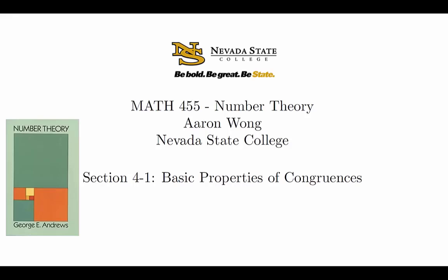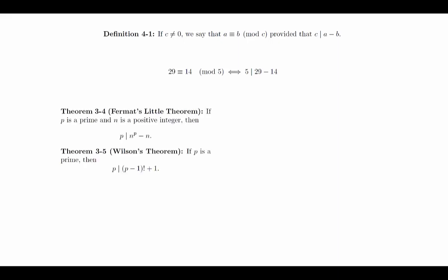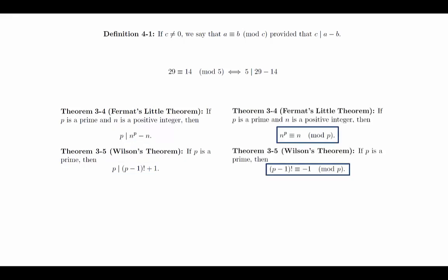Congruences are an extension of the idea of divisibility. Instead of checking to see whether a single number is divisible by another, we're actually looking at whether two numbers are related to each other via the divisibility condition. If c is not equal to 0, we say that a is congruent to b mod c, provided that c divides a minus b. For example, we have that 29 is congruent to 14 mod 5, since 29 minus 14 is 15, and 5 divides 15. We can also restate Fermat's theorem and Wilson's theorem in terms of congruences. The original statements are in terms of divisibility; the translation of these theorems to statements about congruences is just a matter of applying the definition.